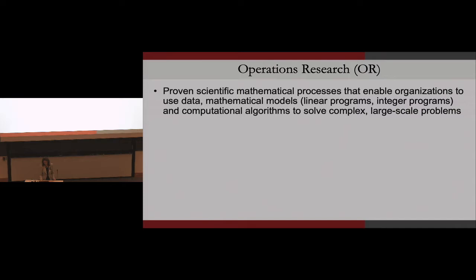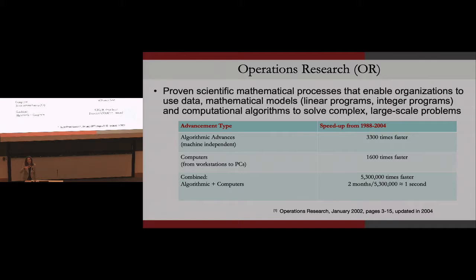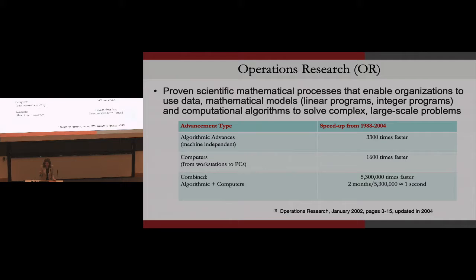This first slide is dated, but it gives a sense of how our field has progressed. There was a paper by a group led by Bob Bixby looking at the time period from 1988 to 2004 — algorithmic advances, not computing — and how it affected the solvability of problems. Using a set of test problems, they found that through algorithmic advances alone, the speed-up was 3,300 times faster. On the computing side, the speed-up was 1,600 times faster.